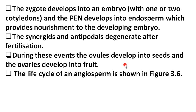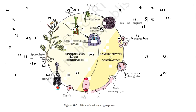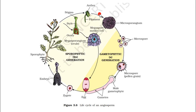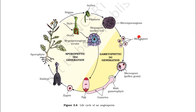During these events, the ovules develop into seeds and the ovaries develop into fruit. The life cycle of an angiosperm is shown in Figure 3.6. Looking at the life cycle, there are two generations: sporophytic and gametophytic. All plants go through these two generations at some point in their life cycle.